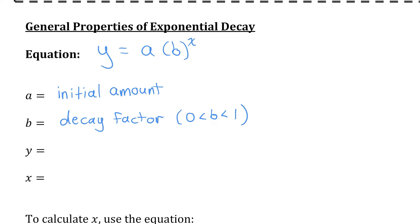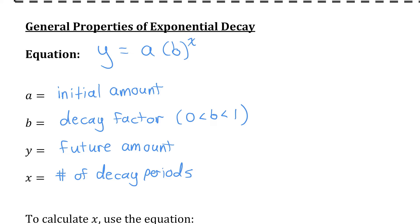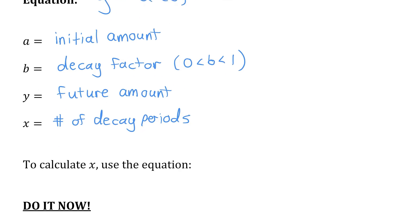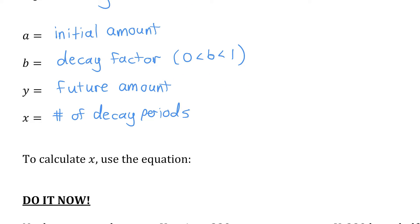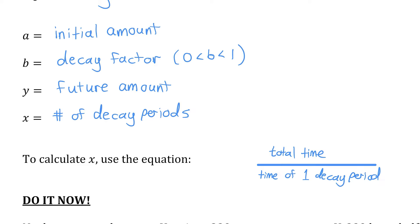In the previous lesson, the b value — the base of the power — was always bigger than one, which is why it was exponential growth in lesson one. But in this lesson, it's always exponential decay. Y stands for the future amount, and x is the number of decay periods — or another way of thinking about it, the number of times that a is going to be multiplied by b. We can always calculate x by doing the total amount of time divided by the time of one decay period, which tells us how many times a is going to be multiplied by b.